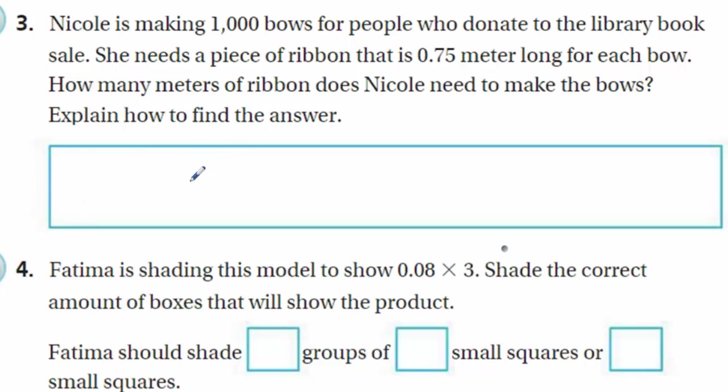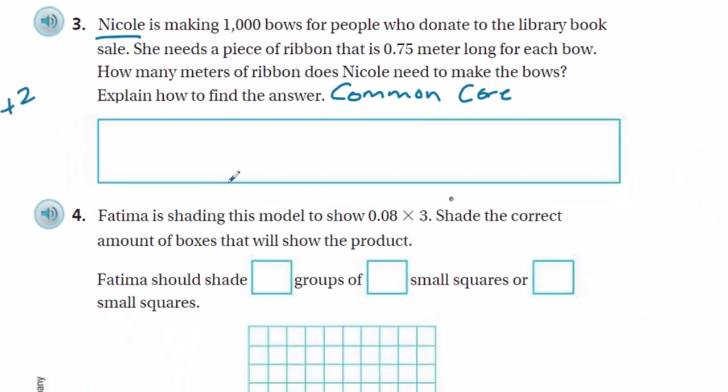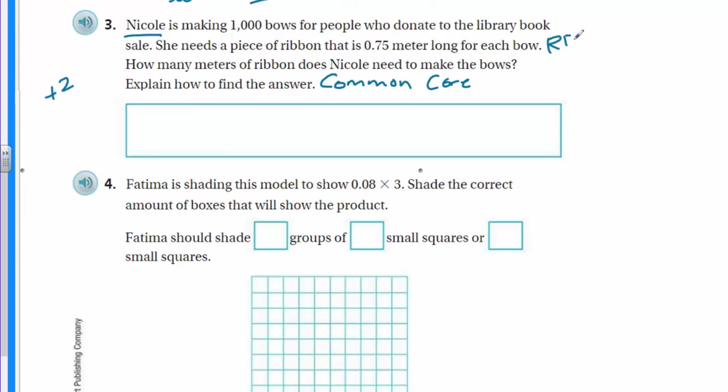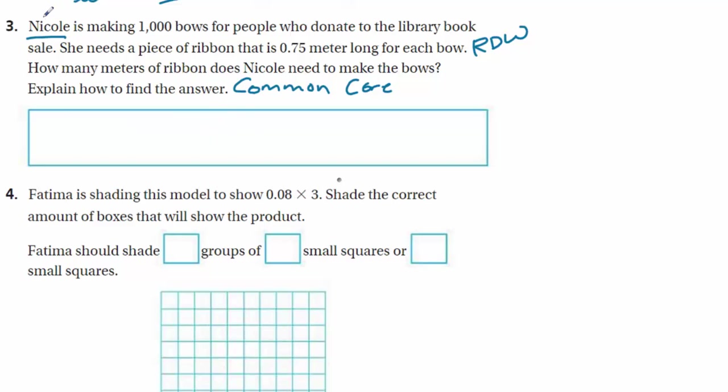Nicole is making 1,000 bows for people who donate to the library book sale. That's very nice. Nicole, you're famous. She needs a piece of ribbon that is 0.75 meter long for each bow. How many meters of ribbon does Nicole need to make the bows? Explain how to find the answer. We have two jobs here. See, on a test, if I were to do this one, my students would be facing a two-point question. Because you have how many meters of ribbon does Nicole need to make the bows, and then you have to be able to explain. Why? Because that's common core, right? Common core. It's all about showing the higher level thinking.